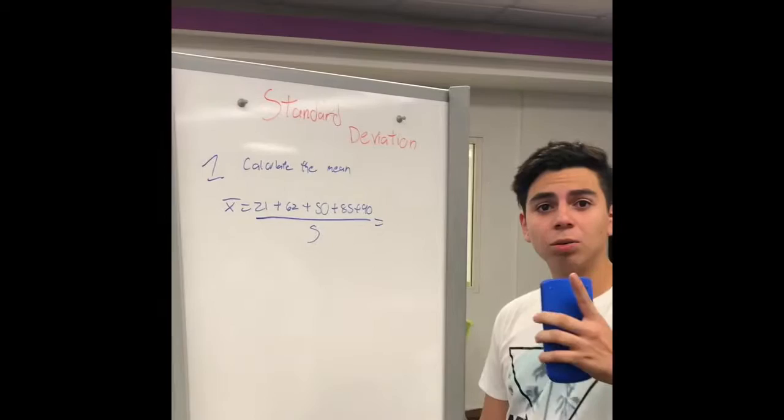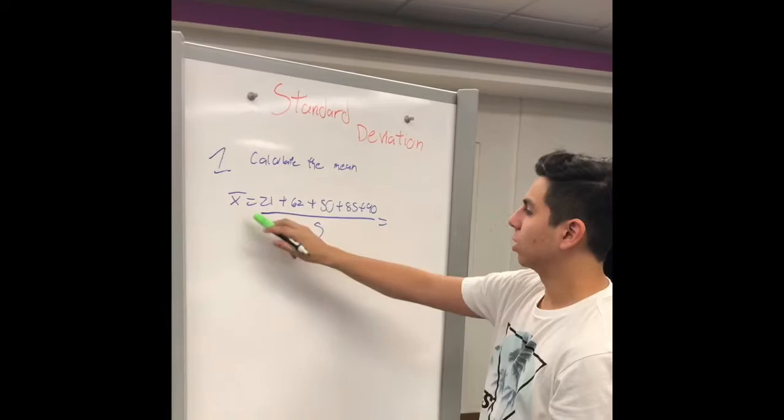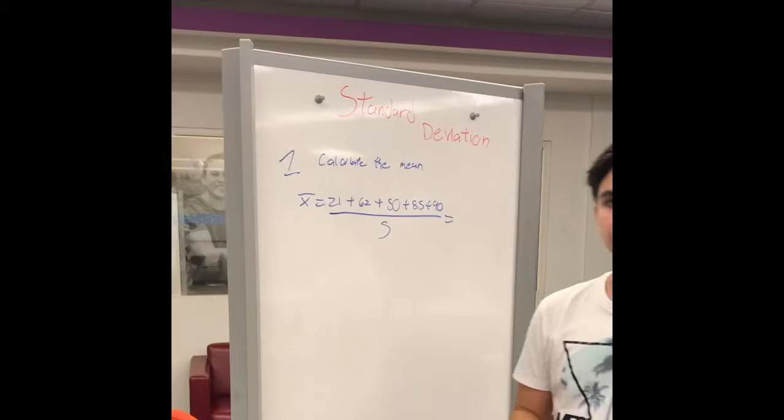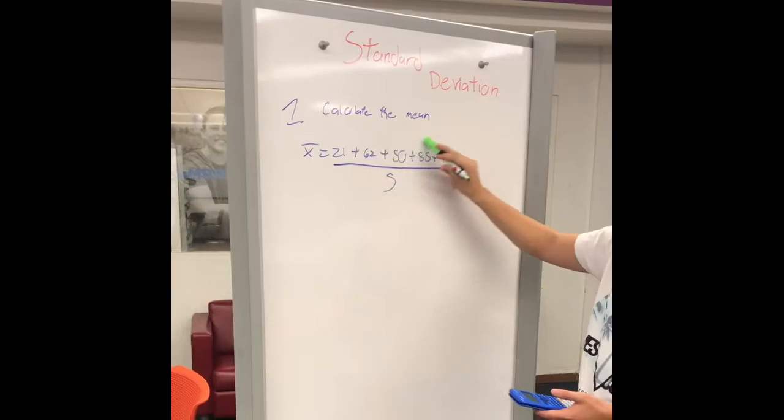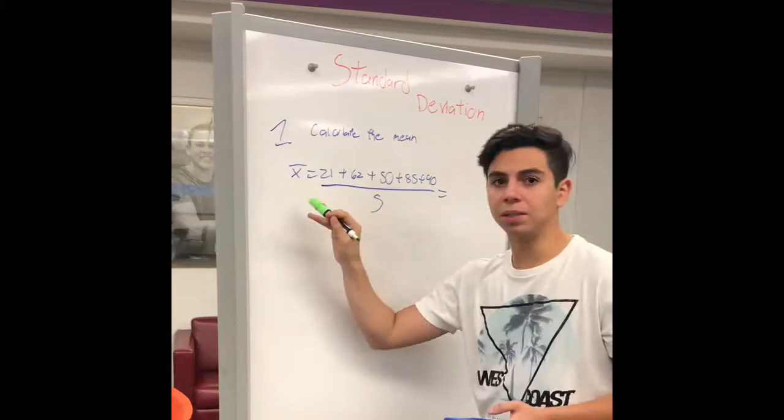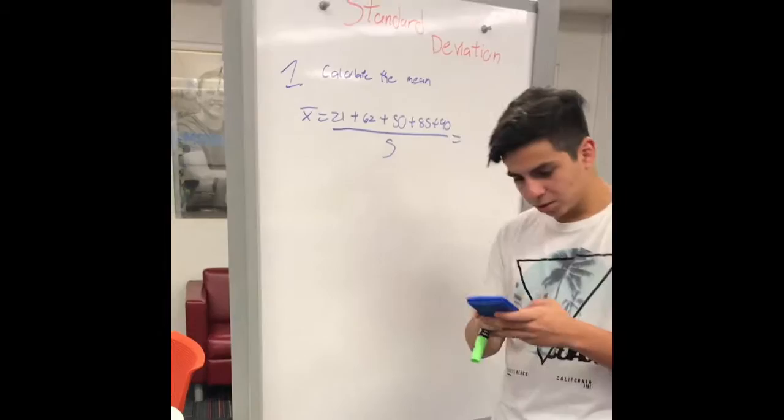This is the first step to calculate the standard deviation: calculate the mean. You have to arrange your values, well in this case I didn't arrange them, and divide it by the same amount of values. The mean is represented by x with a bar on top of them.